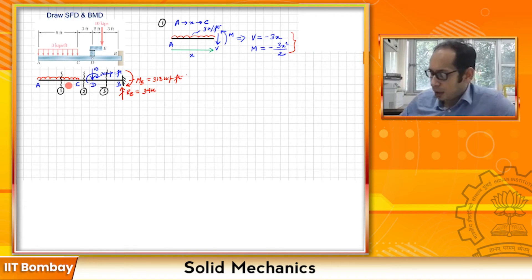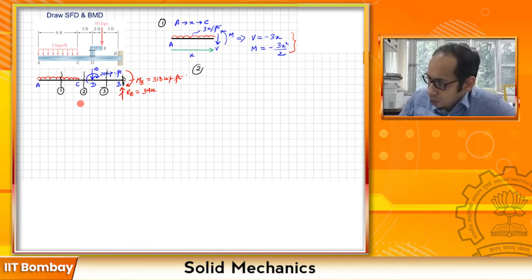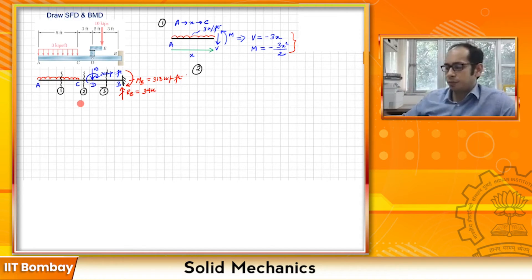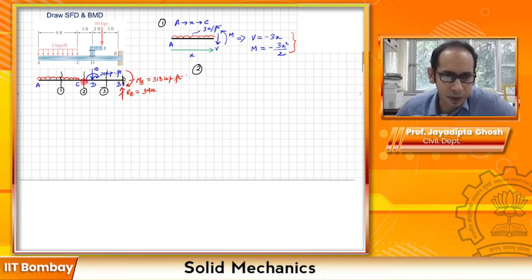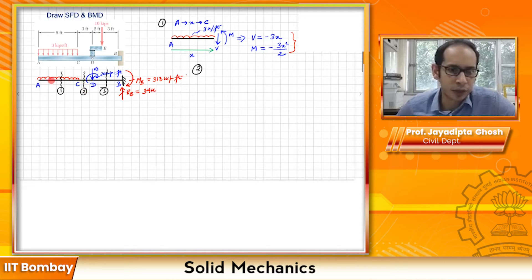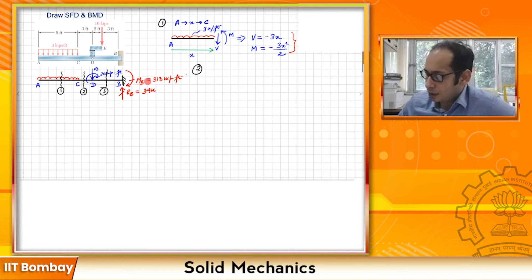Next is section 2. Again, going from left to right — from A through C to section 2 — is simpler because you only have to deal with the UDL. If you go from right to left, you would have to deal with reactions, the point load, and the moment, which is more complex. So for section 2 as well, we go from left to right.